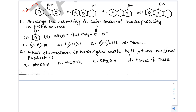In protic solvent, if there is a negative charge on oxygen (O⁻), it is maximum nucleophilic. OR⁻ is more nucleophilic than OH. Among the species, OR⁻ is ranked highest in nucleophilicity, followed by related oxygen nucleophiles in decreasing order.